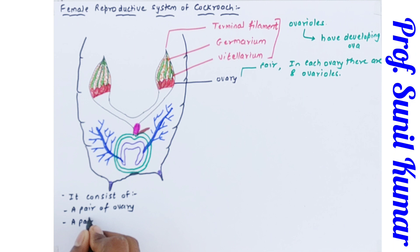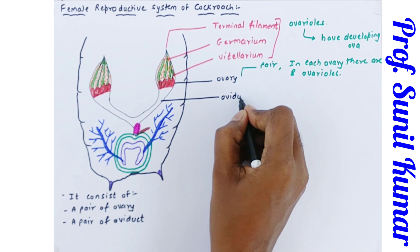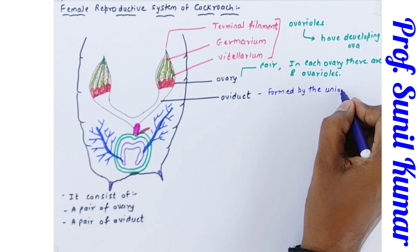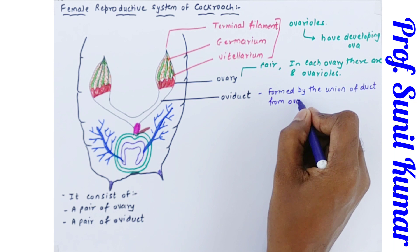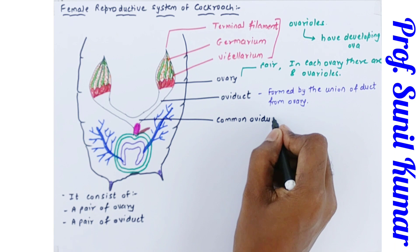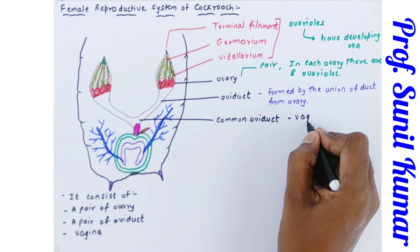The system also consists of a pair of oviducts. From the right ovary comes the right oviduct, and from the left ovary comes the left oviduct. These oviducts are formed by the union of the ovarian ducts, and the right and left ducts combine to form a common oviduct. This common oviduct is also known as the vagina of the female cockroach. It opens into the genital chamber.